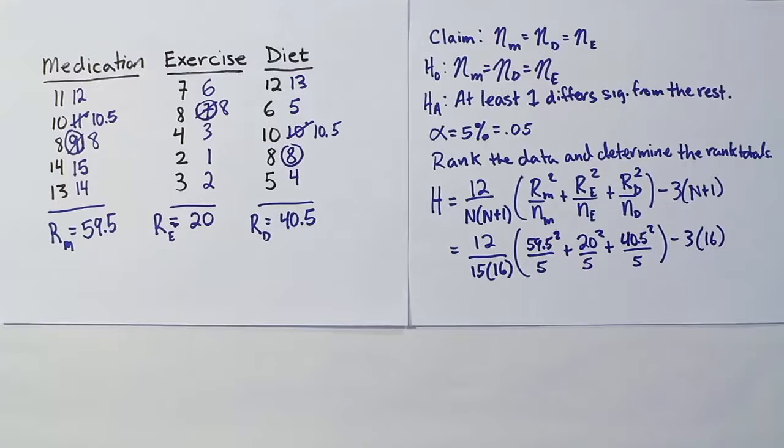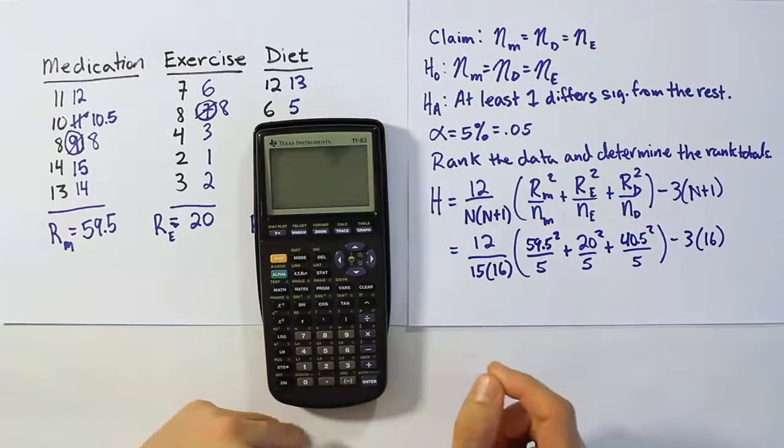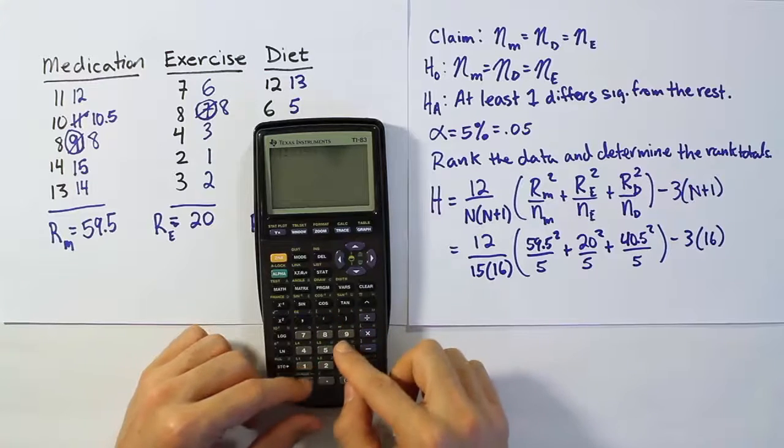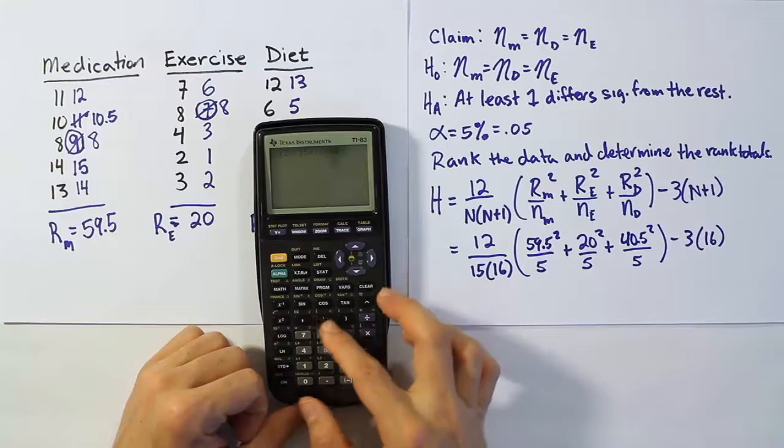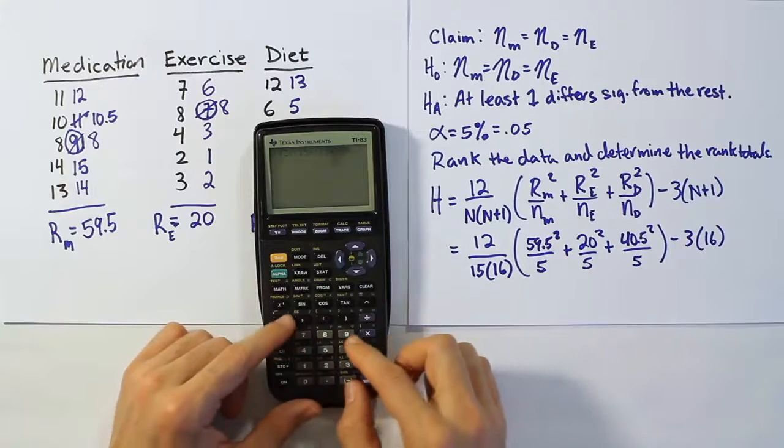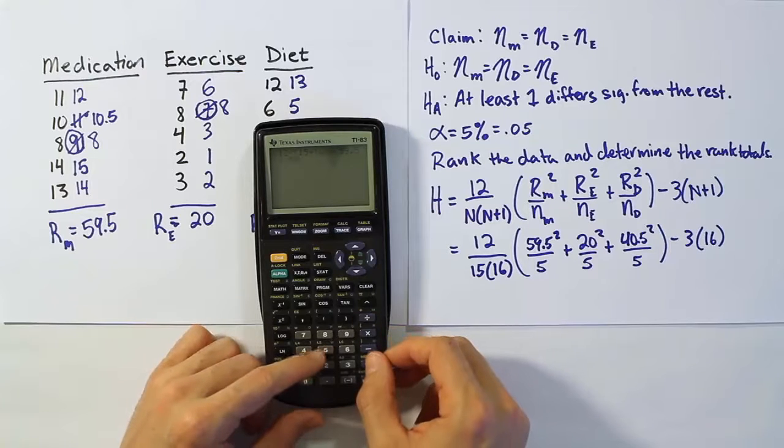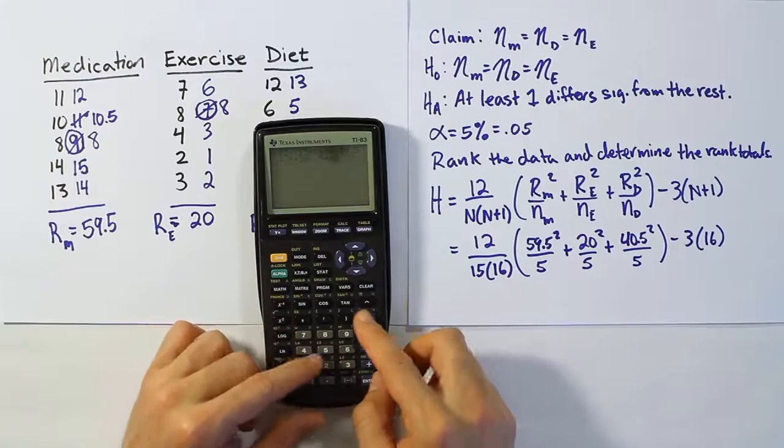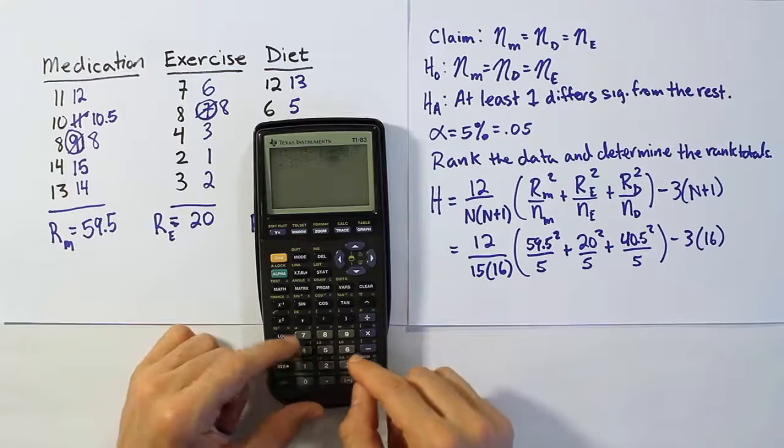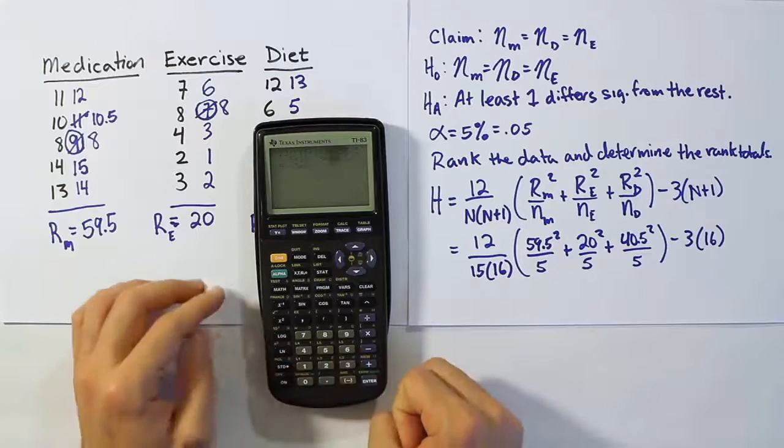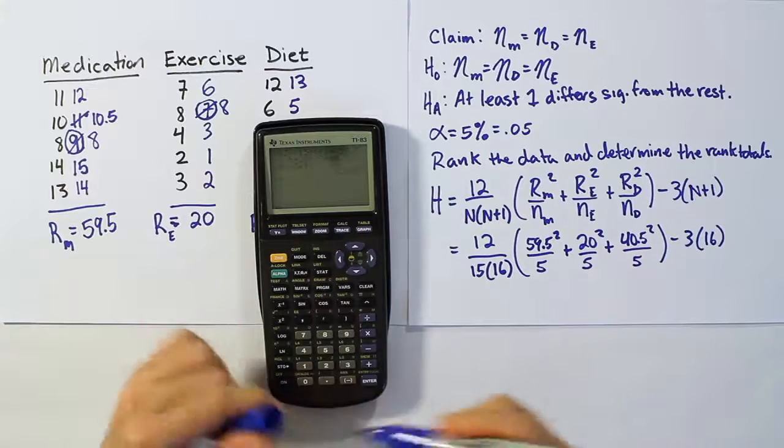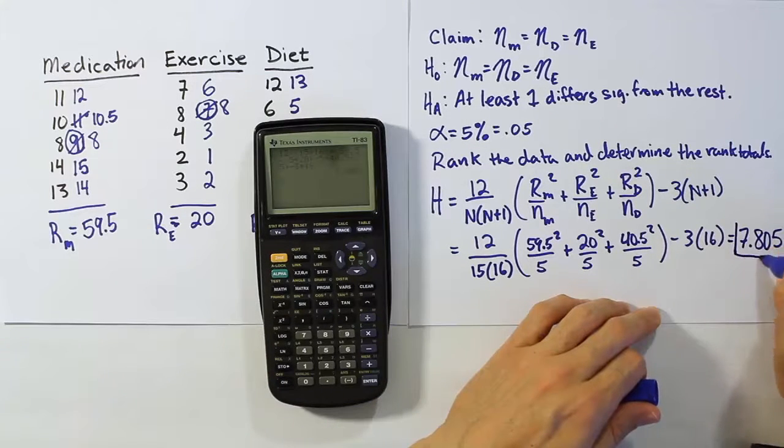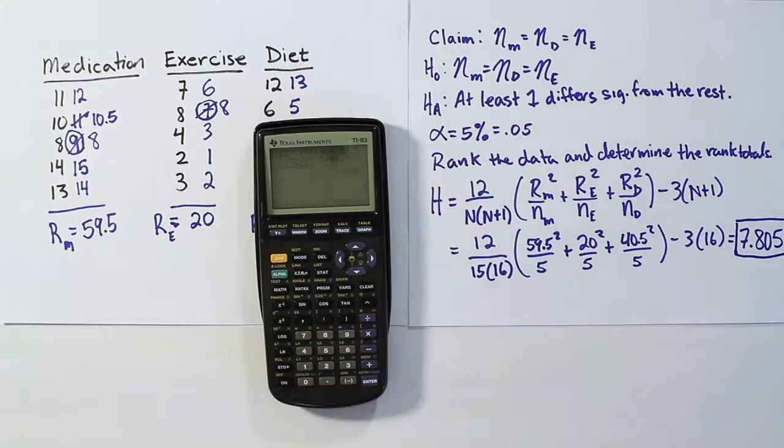Let's check that out and see what we get. So for our test stat, you can do this a number of ways, but you can just do 12 divided by parenthesis 15 times 16, close that parenthesis, then hit times, open parenthesis, 59.5 squared divided by 5 plus 20 squared divided by 5 plus 40.5 squared divided by 5, close it up, minus 3 times 16 or 48. And when we're done, we get the answer 7.805. That's your answer for the H test statistic.